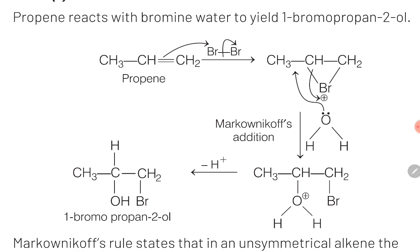After this, in the second step, water becomes the attacking nucleophile and it comes and attacks the carbon with less hydrogen. This is Markovnikov rule. Water is attacking the carbon at the center because it has less hydrogen. After the attack of water, H⁺ ions are removed and this results in the formation of 1-bromopropan-2-ol.